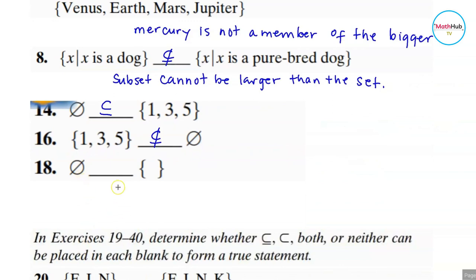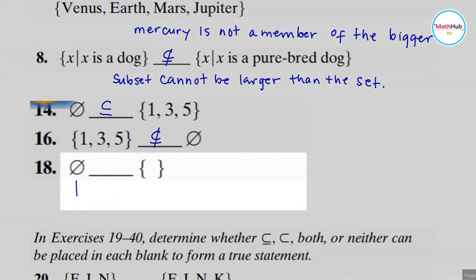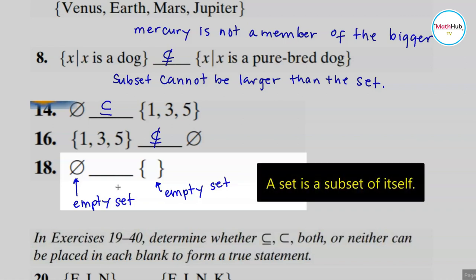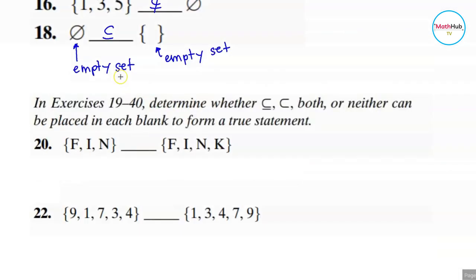This symbol here is used to denote an empty set. I want you to note that this is also the empty set — this is another notation for an empty set. So these two sets are equal, and since a set is always a subset of itself, this one is a subset.